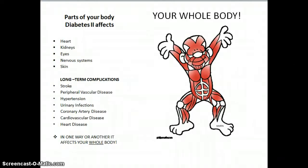Diabetes does take effect on certain parts of your body. Overall, one way or another, it affects your whole body. Some of the main parts are your heart, your kidneys, your eyes, your nervous system, and your skin. Some long-term complications due to diabetes include chances of a stroke, hypertension, cardiovascular disease, and heart disease. Overall, diabetes can affect your whole body.